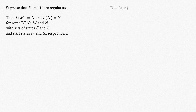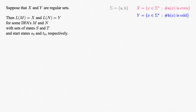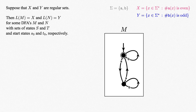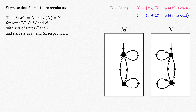For a running example, let's take sigma to consist of a and b, and the regular sets x of strings containing an even number of a's, and y the set of strings containing an odd number of b's. Being regular sets, there exist DFAs accepting these sets. A DFA m accepting x could have just two states, corresponding to an even number of a's and an odd number of a's, and transitions that switch states on a's and stay put on b's. We'll accept on an even number of a's. Similarly, a DFA n accepting y could also have just two states, corresponding to an even number of b's and an odd number of b's, and transitions that switch states on b's and stay put on a's. Here we'll accept an odd number of b's.